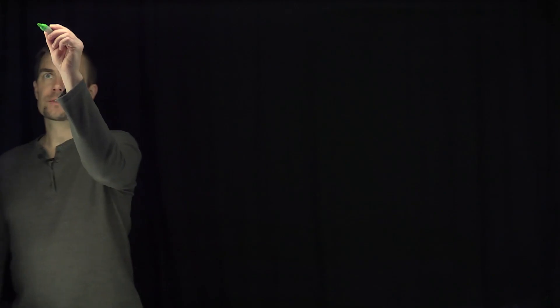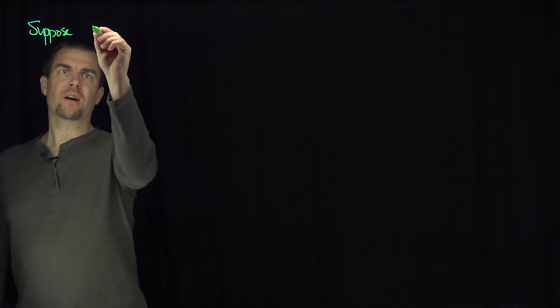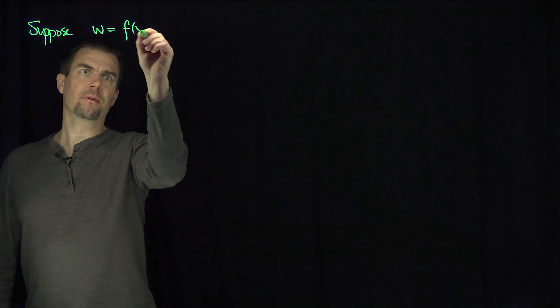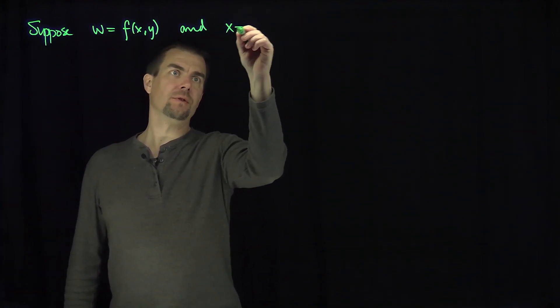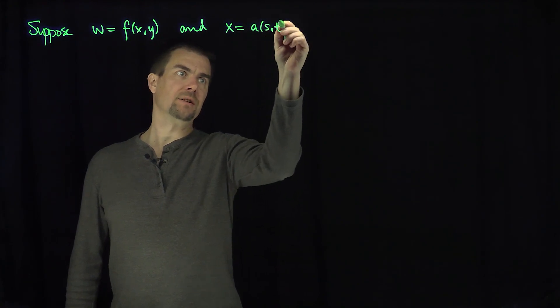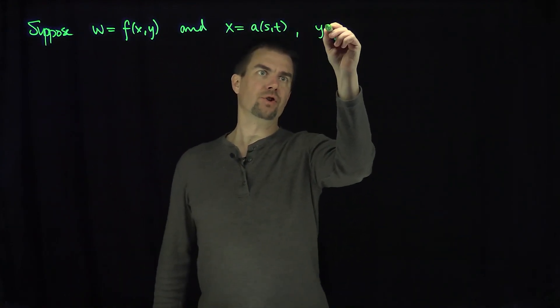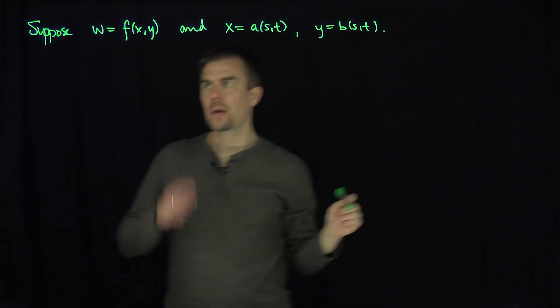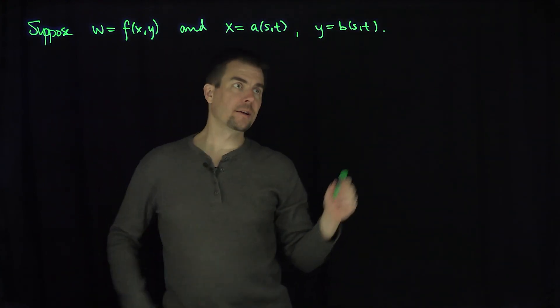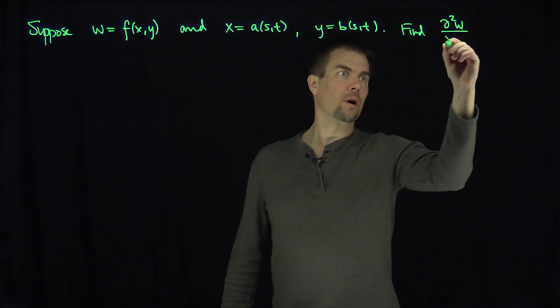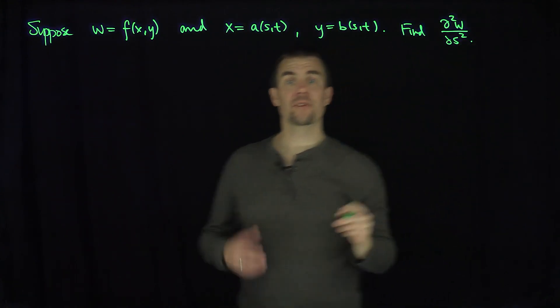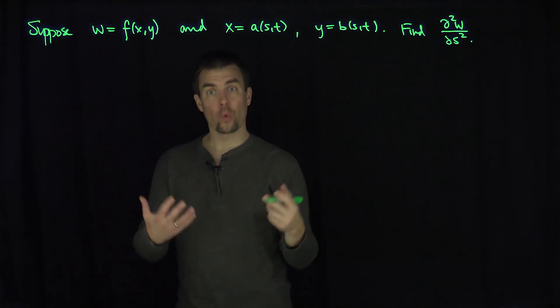Hello, students. In this video, we'll see how to iteratively use the chain rule for a function of several variables. Let's suppose we have w = f(x, y), where x is a function a(s, t) and y is a function b(s, t). What we'd like to find is ∂²w/∂s², the second partial derivative using the chain rule twice.